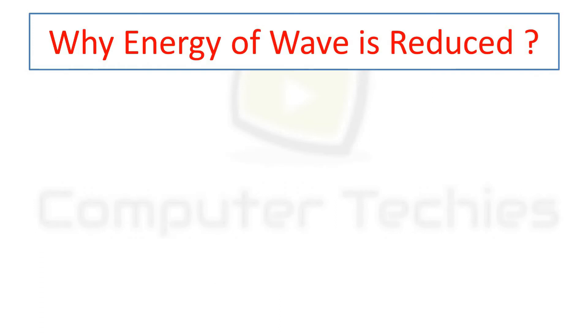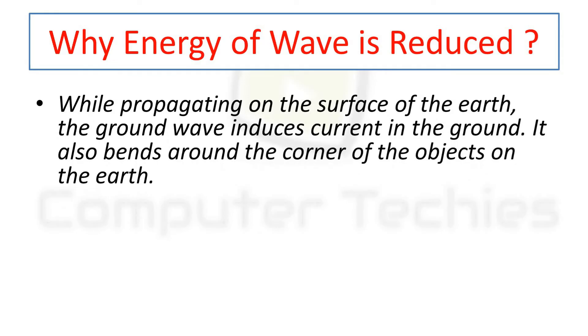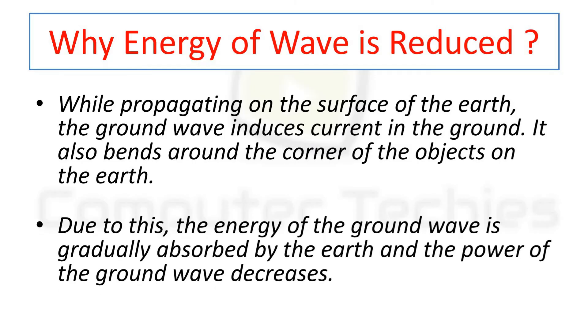High energy of the waves is reduced. While propagating on the surface of the earth, the ground wave induces current in the ground. It also bends around the corner of objects on the earth. Due to this, the energy of the ground waves is gradually absorbed by the earth and the power of the ground wave decreases.